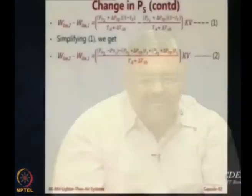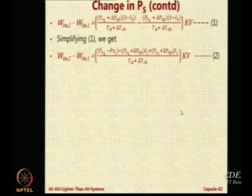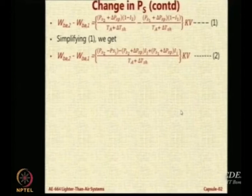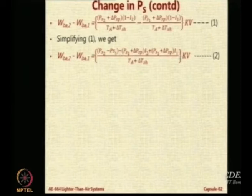Notice that we have two terms in the numerator. One has (PS_2 + delta_PS_p) with I_2; the other has (PS_1 + delta_PS_p) with I_1. Recall from a few slides back there is one expression relating I_2 and I_1 to the pressures and temperatures. Using that expression, PS_2 plus delta_P times I_2 equals PS_1 plus delta_PS_p times I_1, because I_2/I_1 = (PS_1 + delta_PS_p)/(PS_2 + delta_PS_p). This term has a negative sign and the other a positive sign, and both terms are actually equal — so they cancel.